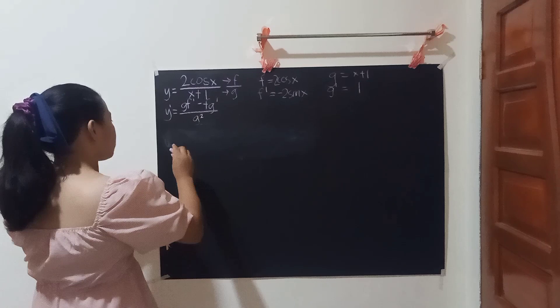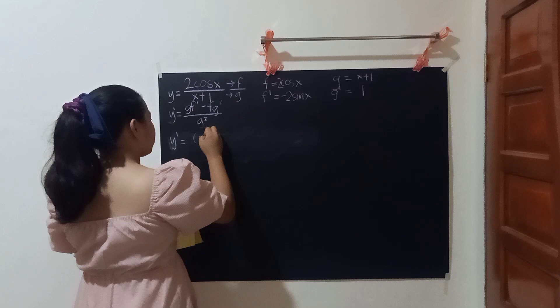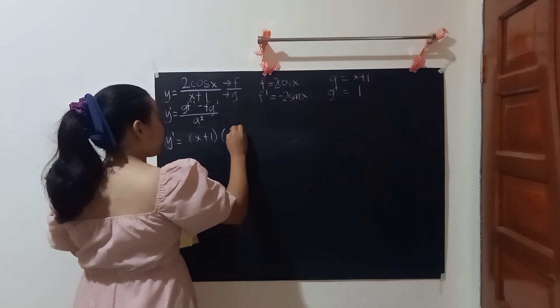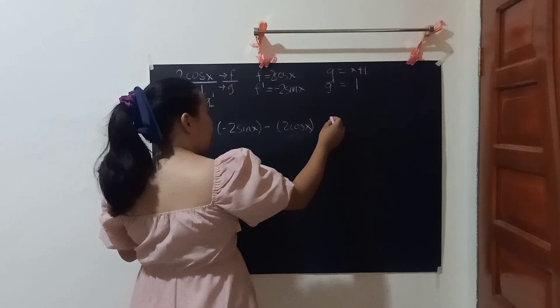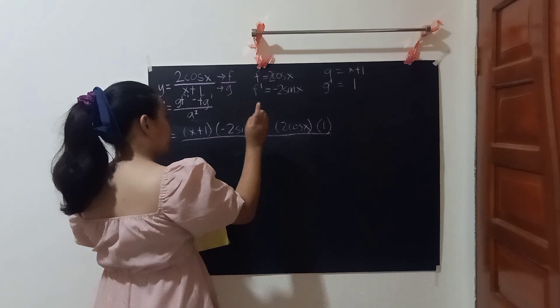Let's go ahead and apply this formula. Y prime is equal to G, which is (x plus 1), times F prime, which is negative 2sin(x), minus F, which is 2cos(x), times G prime, which is 1, over G squared, which is (x plus 1) to the second power.